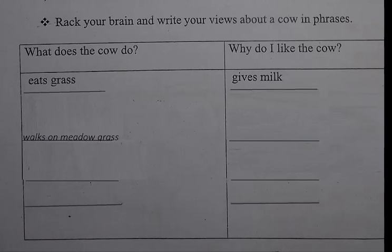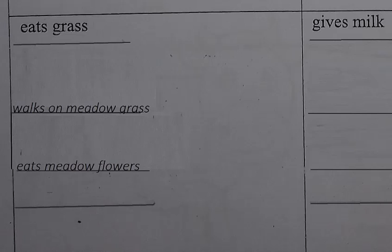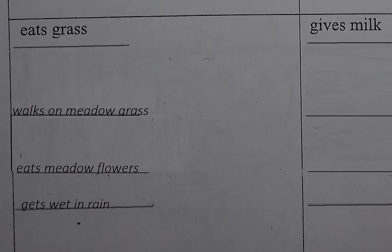Now write another phrase about the cow. Write 'eats meadow flowers.' E-A-T-S, meadow M-E-A-D-O-W, flowers F-L-O-W-E-R-S. It means the cow eats meadow flowers. Now write another phrase: 'gets wet in rain.' G-E-T-S, W-E-T, in, R-A-I-N. It means the cow gets wet in rain.